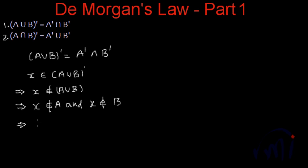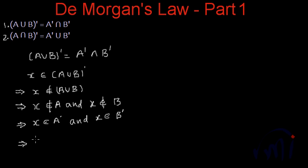That means X is definitely there in A complement. If X is not in A, it has to be there in A complement, and X has to be there in B complement also. So if it is there in A complement and B complement, it will definitely be there in their intersection. That means X will be an element of A complement intersection B complement. So here we have got X as an element of A union B complement and we have arrived at a situation where X is an element of A complement and B complement.